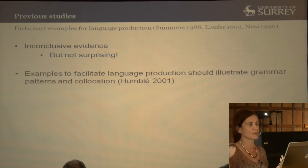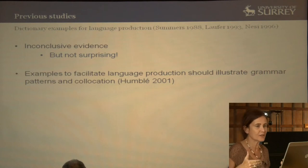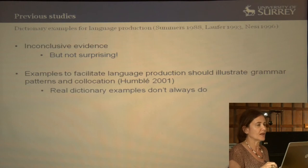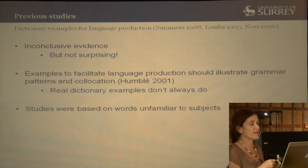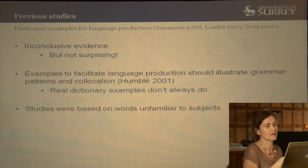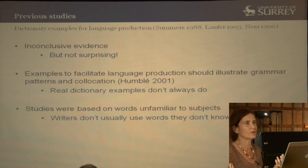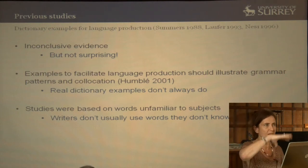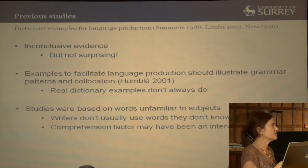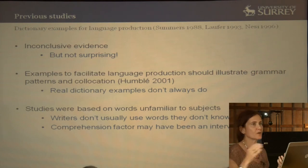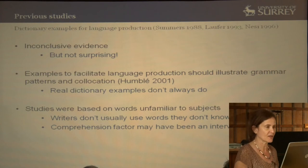Examples to facilitate production have to illustrate the target grammar or target collocation the learner is looking for — and real dictionary examples don't always do that. Another problem in early studies was that they were based on words that were unfamiliar to the subjects. But writers don't normally use words they don't know — they already know the word but want to know how to use it in context. So in those early studies, the comprehension factor may have been an intervening variable, meaning you were not just measuring language production.